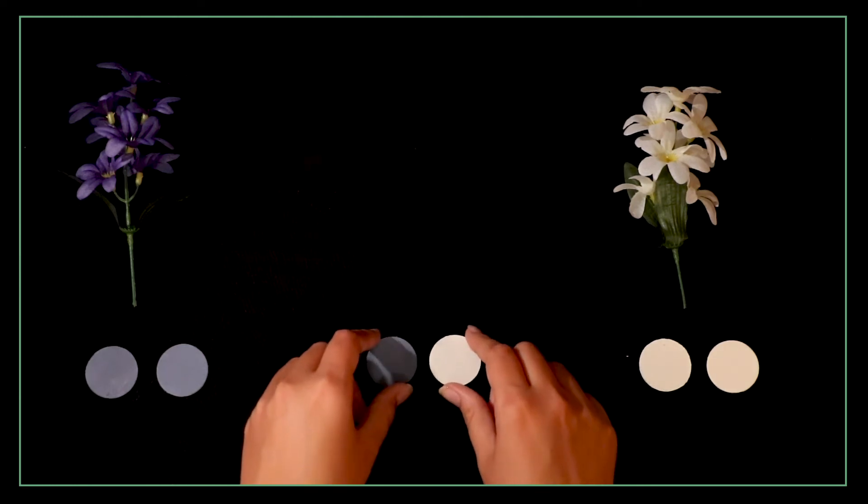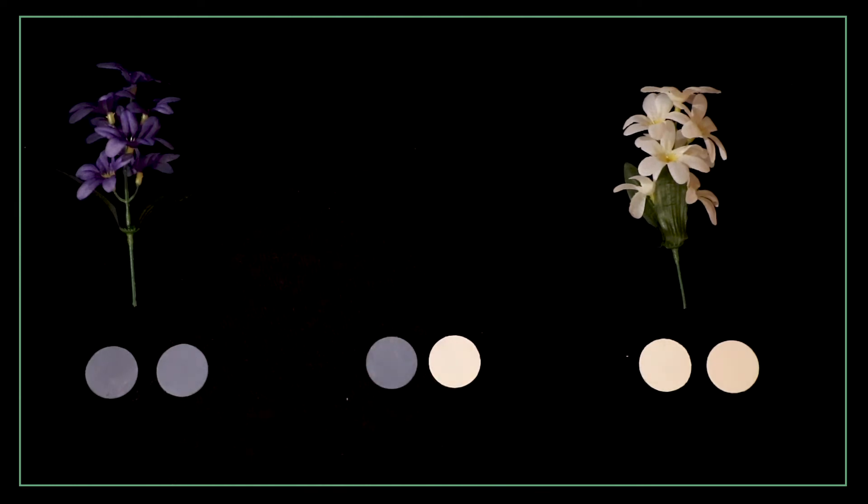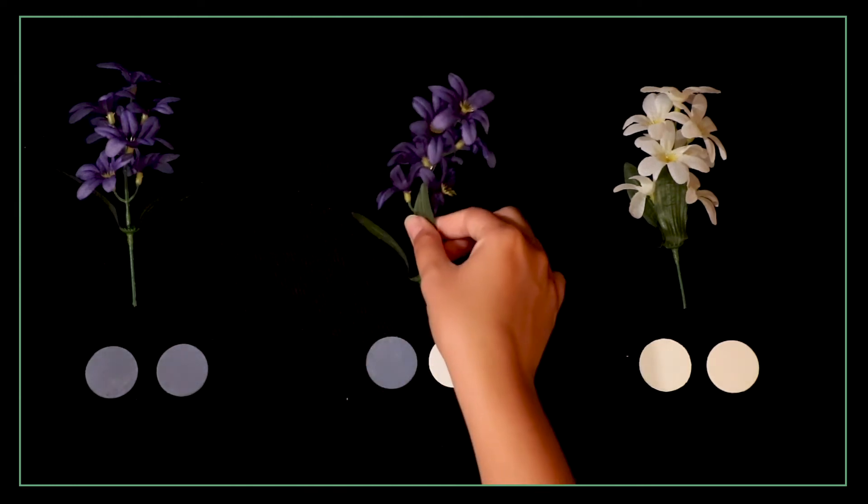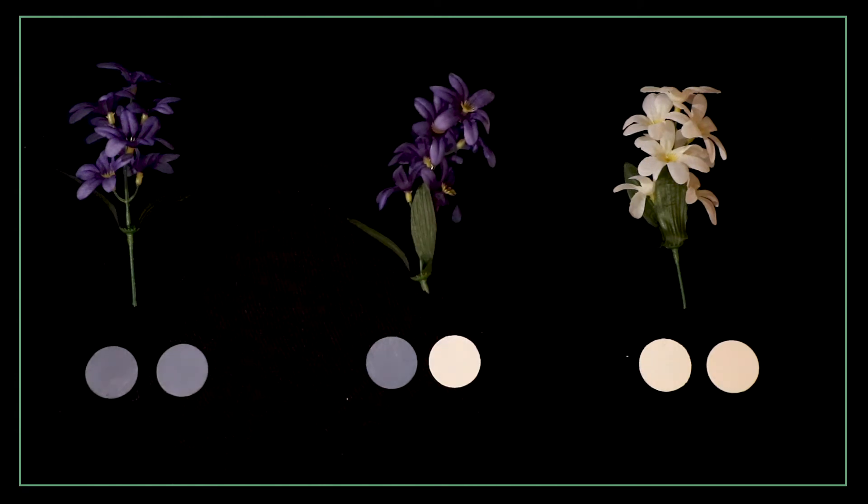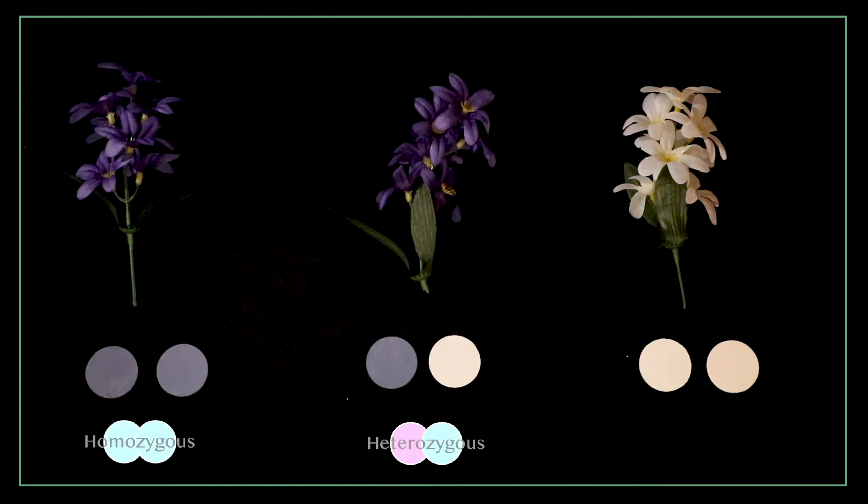Now let's look at the final combination. There's one of each allele in the genotype. Hmm the flower's phenotype is purple. What do you think it would be some kind of mix of light purple? Why does the homozygous purple flower look identical to the heterozygous flower?